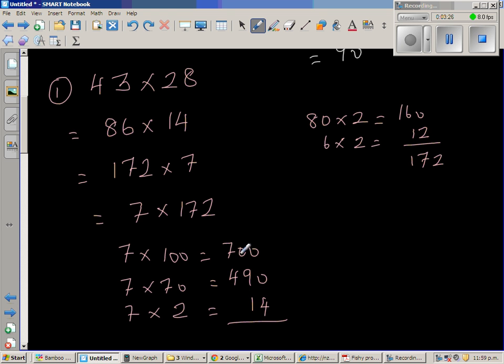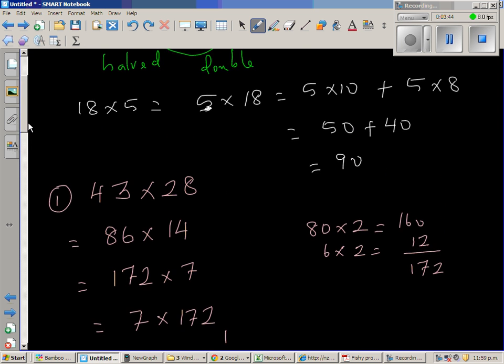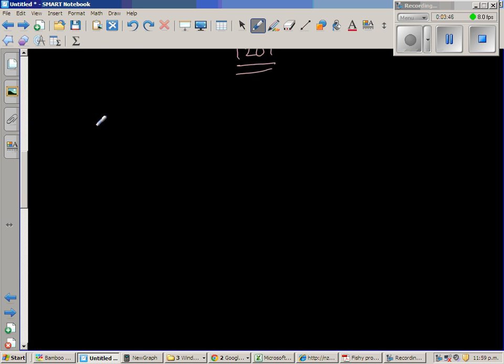So the answer is, this is 4. 9 plus 1 is 10. Carry over 1. So this is 7 plus 4 is 11, plus 1 is 12. So 1204 is the answer. We'll check this on the calculator later on. Let's do the next question.